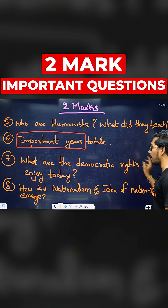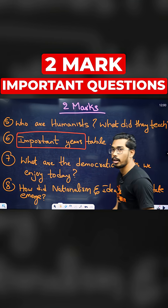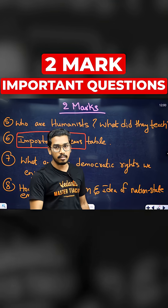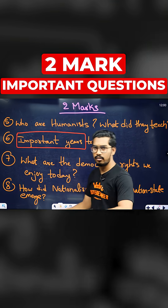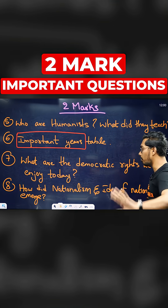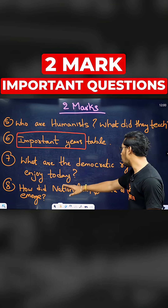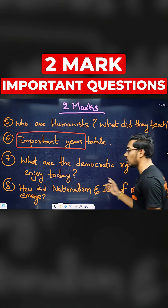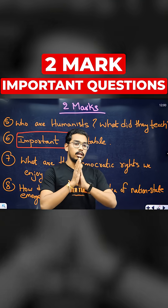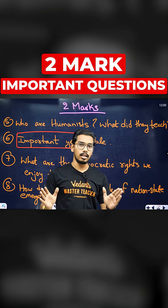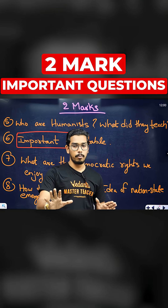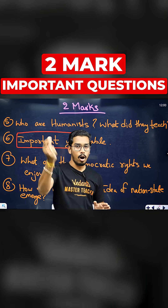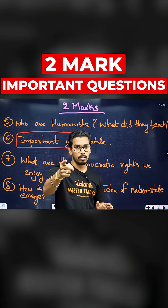What are the democratic rights we enjoy today? We enjoy democratic rights — the fundamental rights are all of them. How did nationalism and the idea of the nation-state emerge? These 8 questions are all of them. 1-mark questions — you are finished.